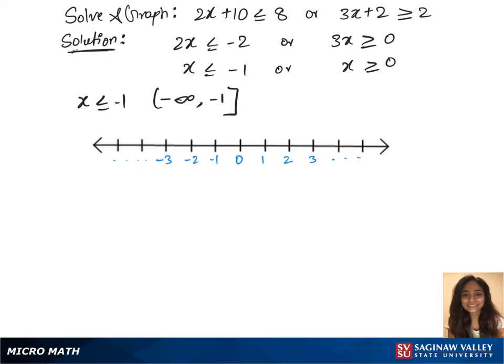Look for -1 on the graph and mark it. That extends to negative infinity. And we have the second inequality x greater than or equals to 0. For that, the interval notation is 0 to infinity.